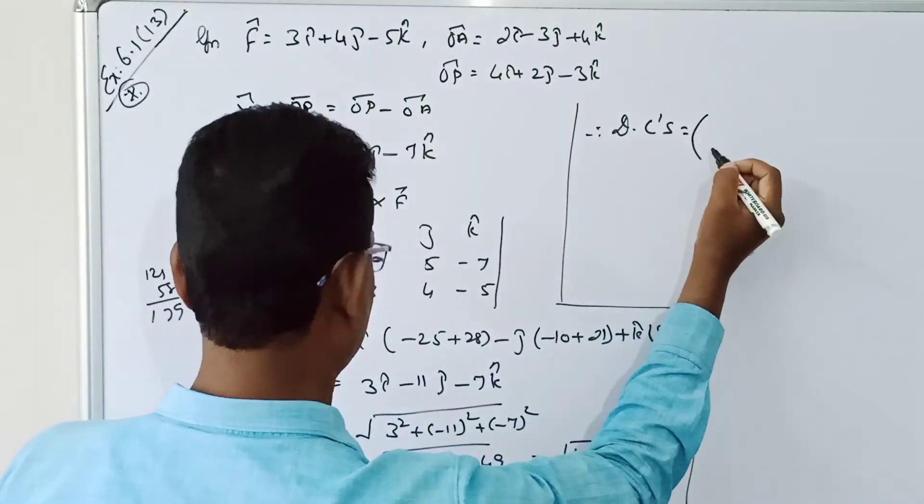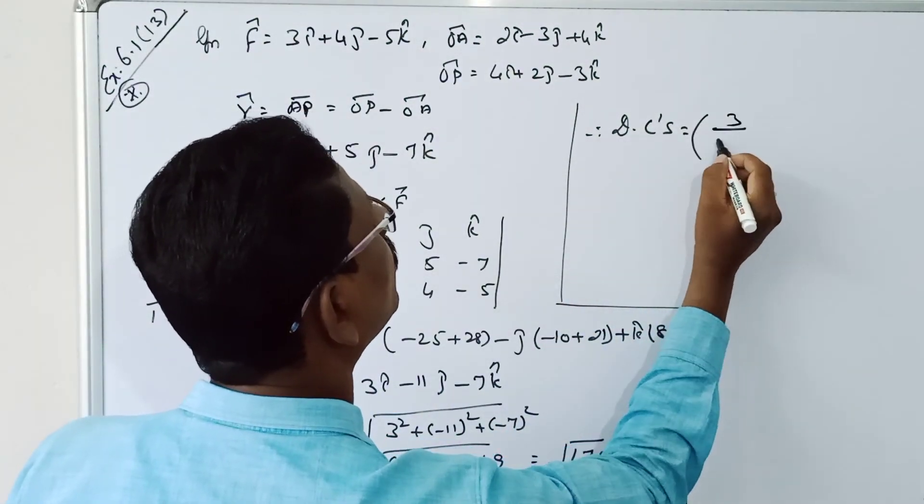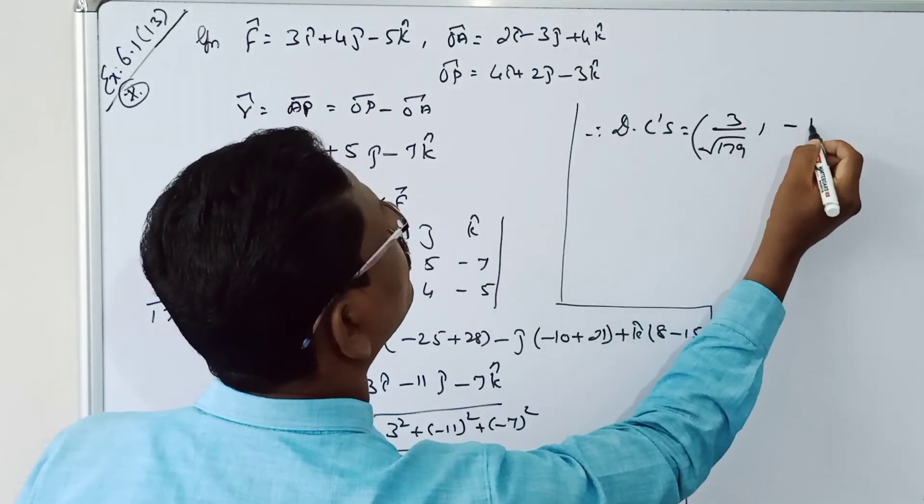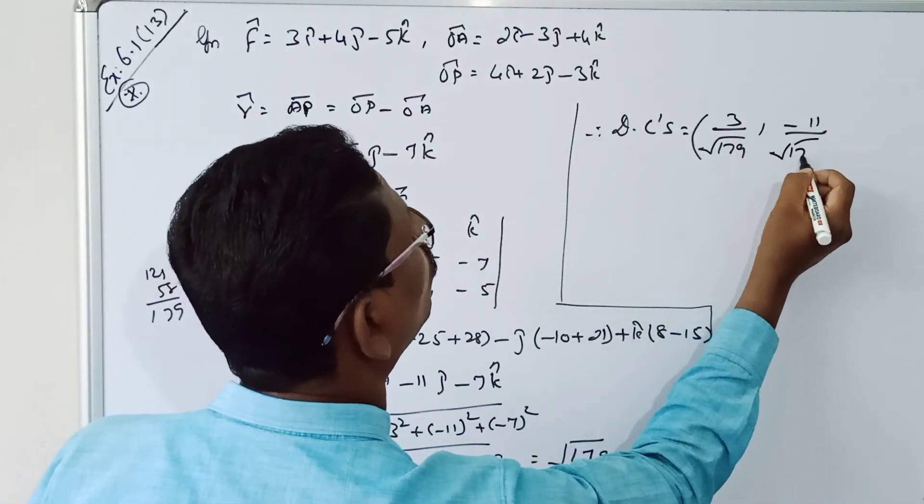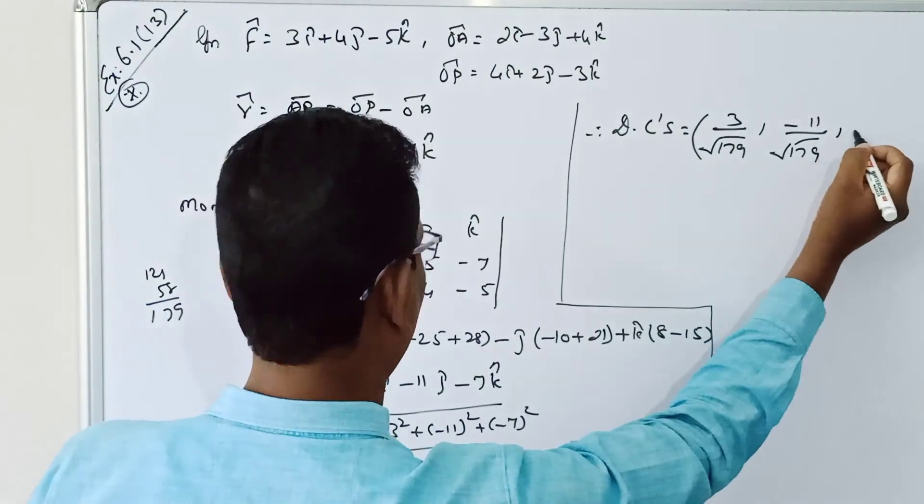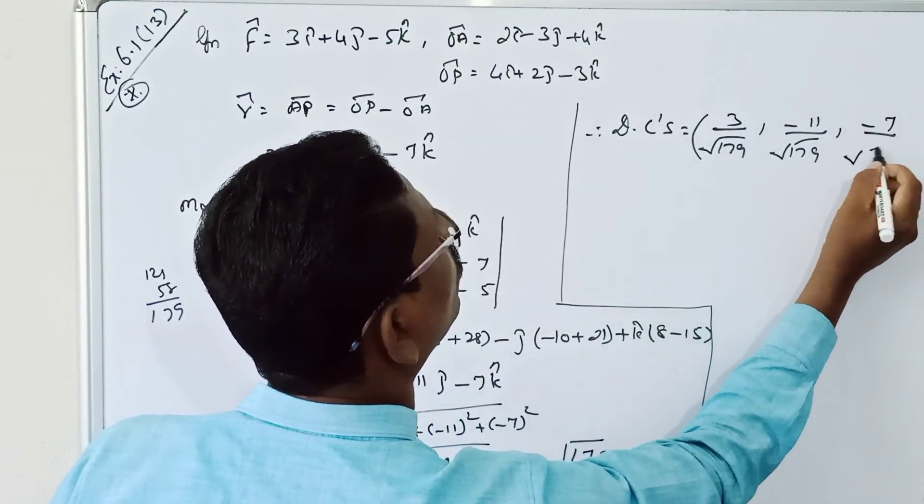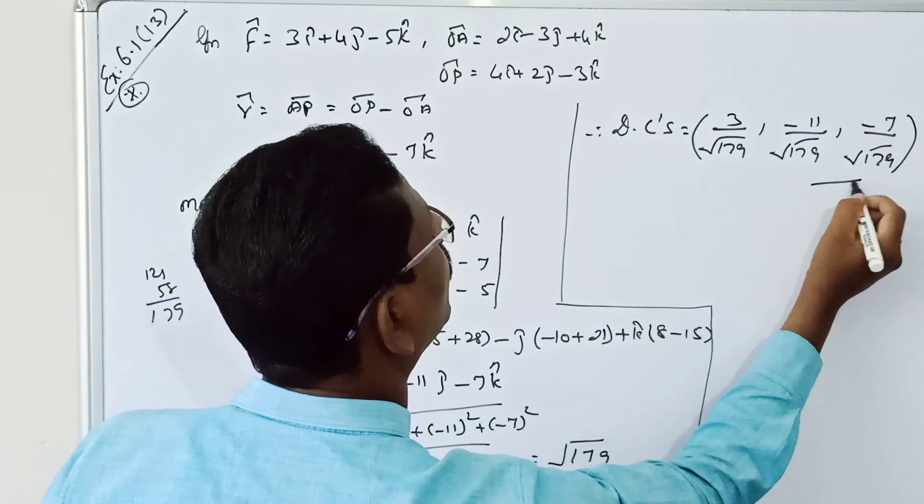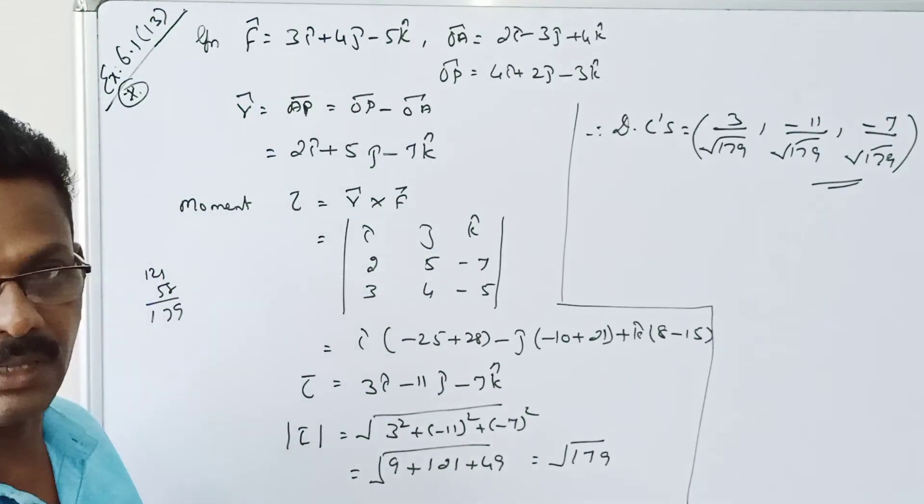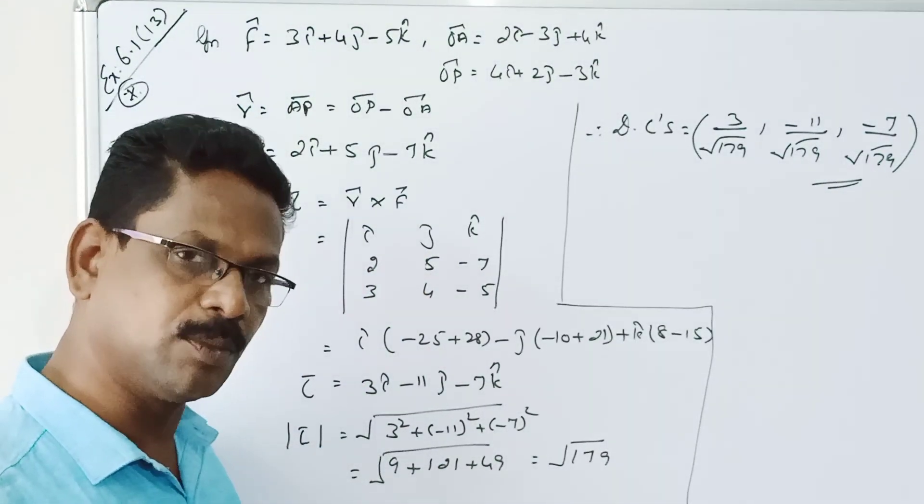So direction cosines is equal to 3 by root of 179, minus 11 by root of 179, minus 7 by root of 179. So direction cosines of the torque vector is 3 by root of 179.